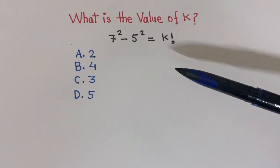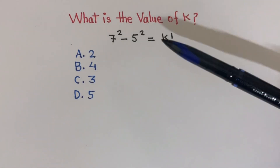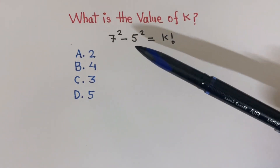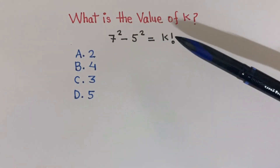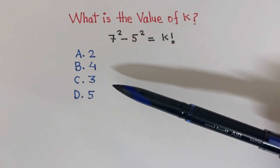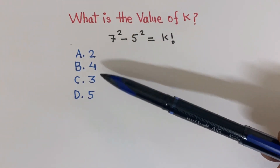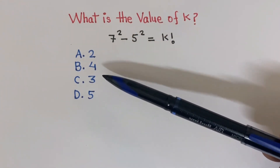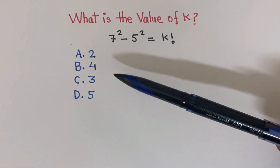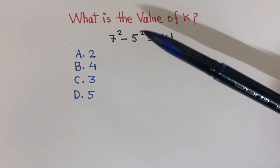A lot of people get this type of question wrong. What is the value of k when 7 squared minus 5 squared equals k factorial? Take the correct choice out of options: a) 2, b) 4, c) 3, and d) 5. Just think a little and solve this problem. I will give you 10 seconds.